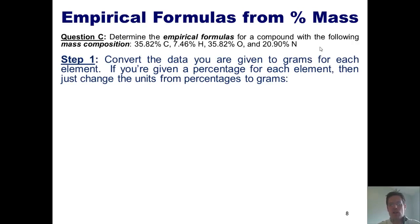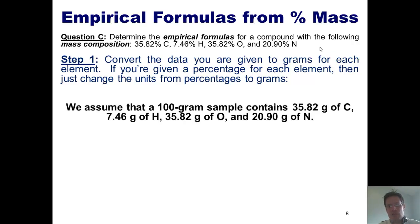Step one, convert everything to grams. So all I really have to do is just take the percent signs and replace them with grams. So if I had a 100-gram sample, I'd assume 35.82 grams of carbon, 7.46 grams of hydrogen, 35.82 grams of oxygen, and 20.90 grams of nitrogen. We're done with step one.